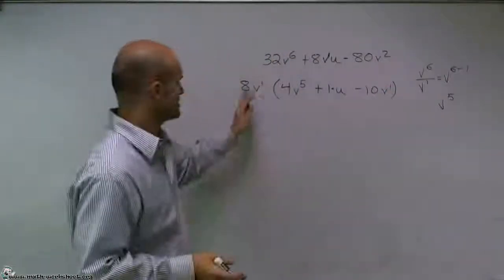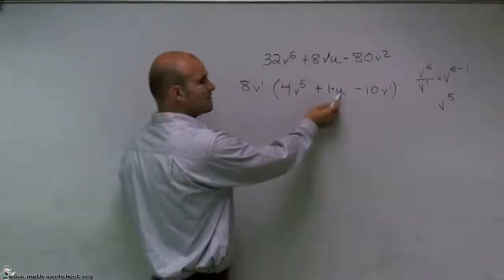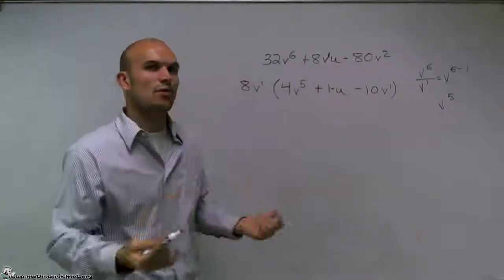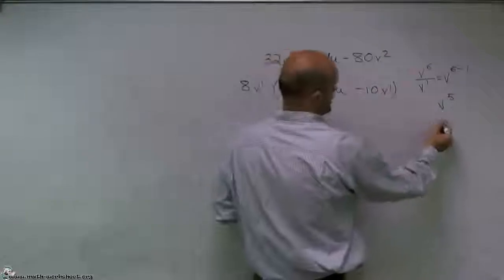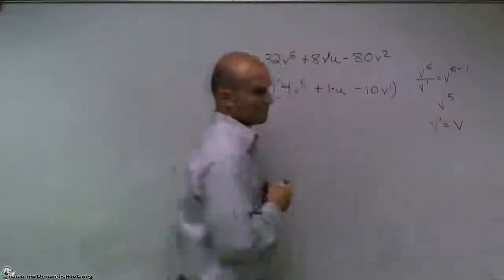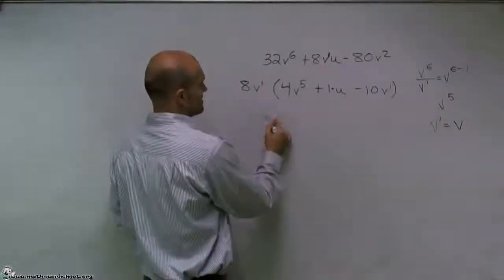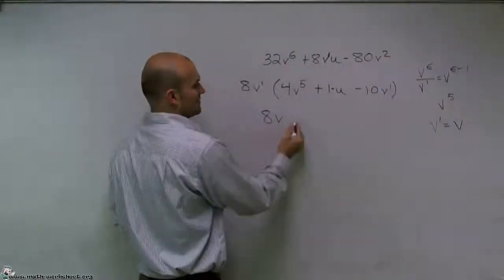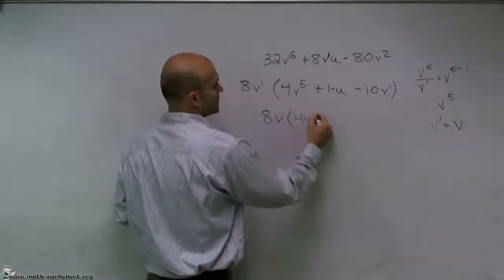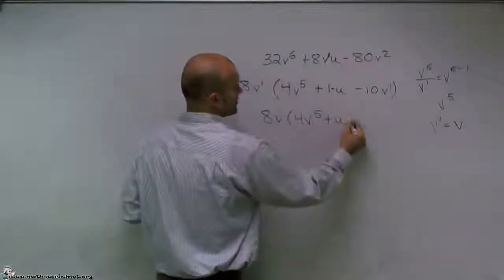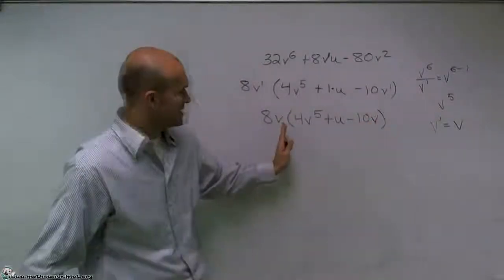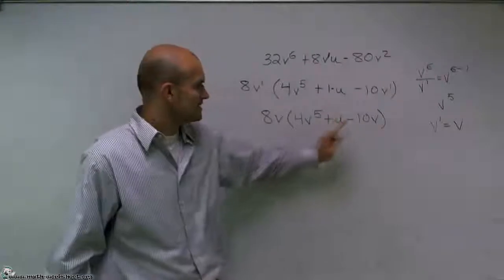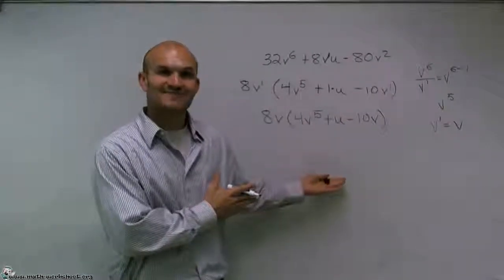Then what I'll do is reduce this. We usually don't write our 1 in front of a variable, nor to write a 1 as our exponent because V to the first power we know just equals V. So let's just write this in a more simplified version. So I'll have 8V times 4V to the fifth plus U minus 10V. I look at my answer, I notice I cannot combine any of those like terms, and that's simply factored. Thanks.